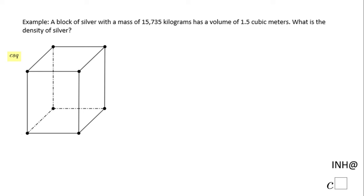Welcome back to INH at C square. In this example, we have a block of silver with a mass of 15,735 kilograms. We're going to use the letter M for that mass. This rectangular prism is the block of silver. The volume of this block of silver is 1.5 cubic meters.